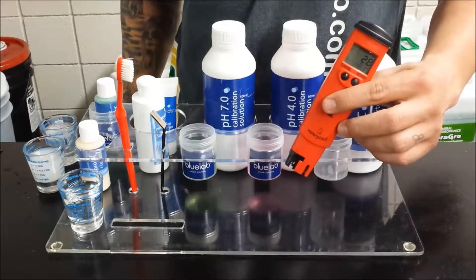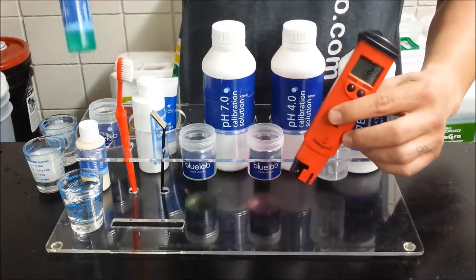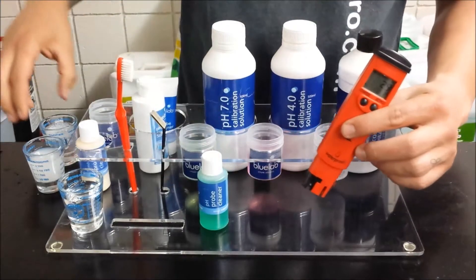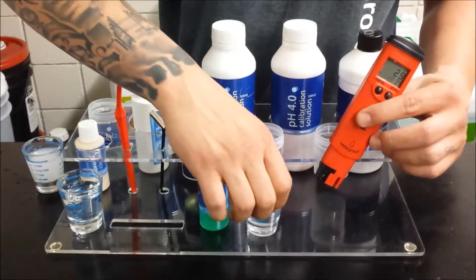First thing you want to do is make sure your pH probe is clean for calibration. So we have some pH probe cleaner here. Mix a few drops with water to get your cleaning solution.